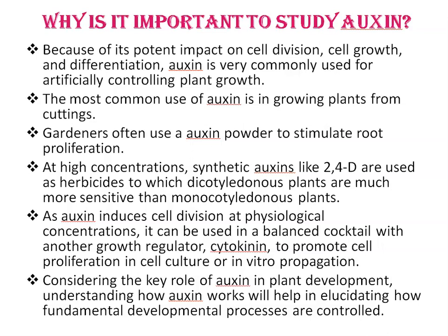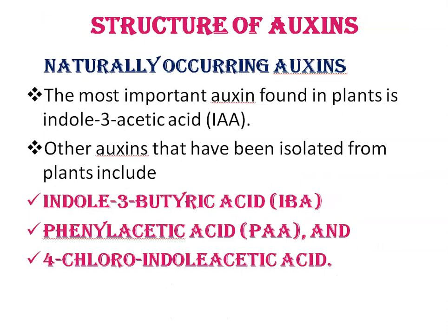Considering the key role of auxin in plant development, understanding how auxin works will help in elucidating how fundamental developmental processes are controlled. Now, the structure of auxins: auxins are naturally occurring or synthetic compounds with auxin activity. The most important naturally occurring auxin found in plants is indole-3-acetic acid (IAA).